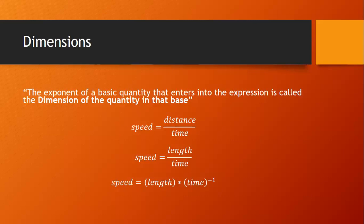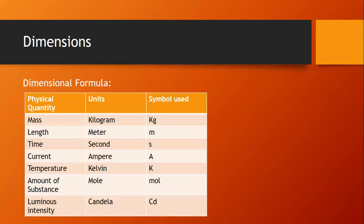Let us see how to write the dimensional formula. I want to represent every basic physical quantity by one letter symbol for convenience. I have taken all the basic physical quantities, the units for those quantities, and the symbols we are going to use. A physical quantity expressed in terms of the basic quantities is enclosed in square brackets, to remind us that the equation is among the dimensions and not among the magnitudes.